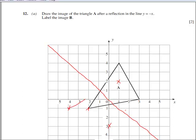And then if we draw our new image in, you can see it does make a perfect reflection. And we need to label that B to ensure we get the marks.